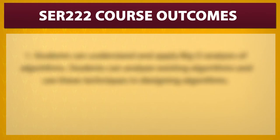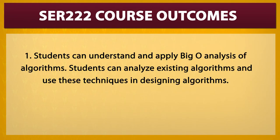This course has four main outcomes. Let's review them now so you have some idea of what you're getting into. Number one, students can understand and apply Big O analysis of algorithms. Students can analyze existing algorithms and use these techniques in designing algorithms.